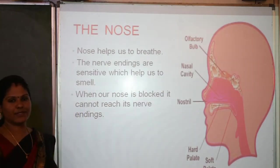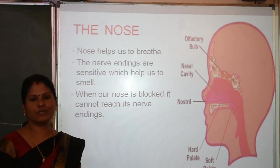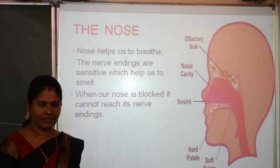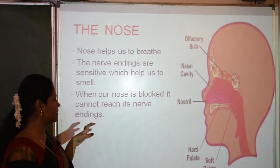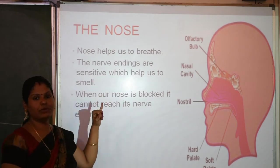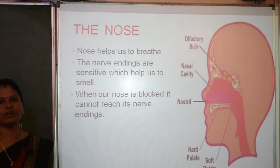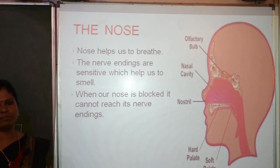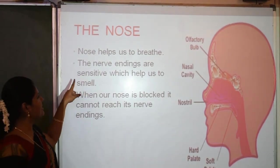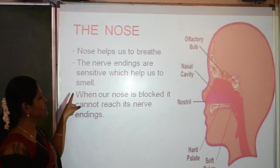The next sense organ is the nose. The main purpose of the nose is to breathe and to smell. The nose helps us to detect whether a smell is good or bad. The nerve endings in the nose are sensitive and help us to smell.